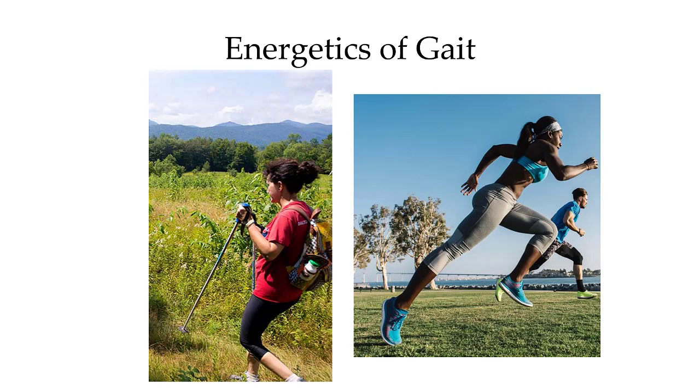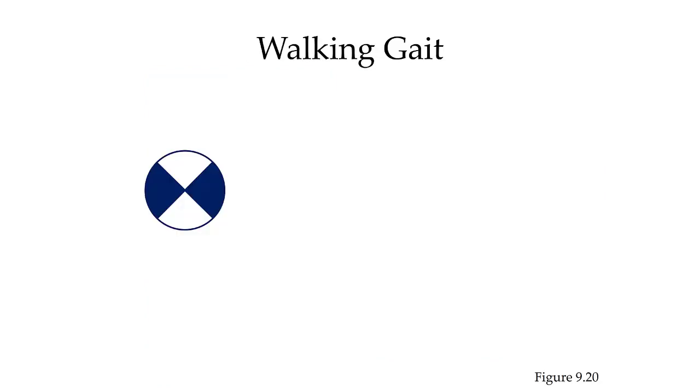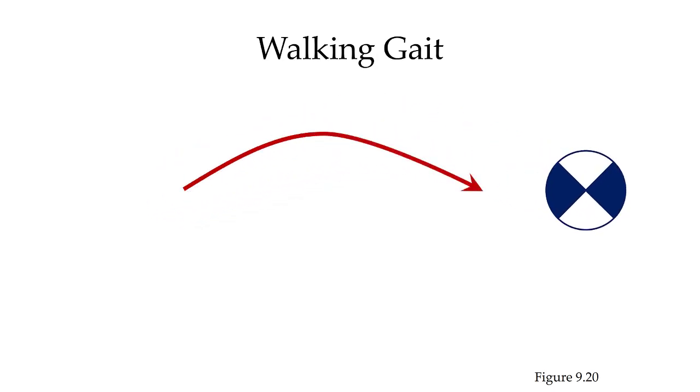Let's shift our focus now to talking about the energetics of gait and how that might relate to efficiency. First, let's look at the center of mass trajectory during walking gait. During walking gait, the center of mass is going to be at its low point at initial contact. It's going to raise up to its high point during mid stance, and then it's going to go back to its low point again at toe off. So the red arrow here is going to represent the trajectory of the center of mass during walking gait.